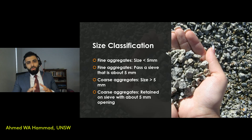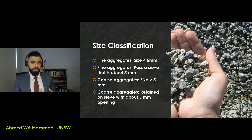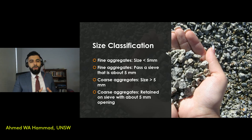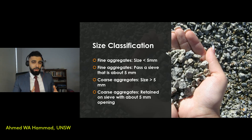Size classification is another system for aggregates. If an aggregate is less than 5 mm, it is considered a fine aggregate — in the lab, if it passes a 5 mm sieve, it's classified as fine. Coarse aggregates have sizes that exceed 5 mm and would be retained on a 5 mm sieve.